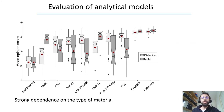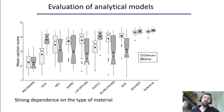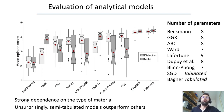Here is the box plot of mean opinion scores for the different analytical models. There is a strong dependency on the type of material — for instance, HGD is very good for dielectrics, while the method from Dupuis is very good for metals. Unsurprisingly, semi-tabulated models outperform others because they have many more parameters.